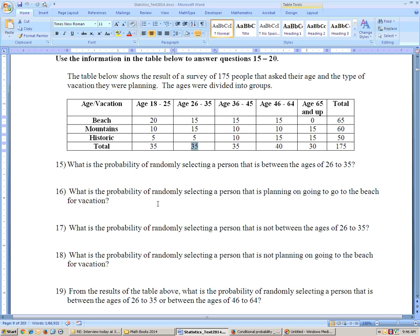Next one, somebody vacations at the beach, 65 out of 175. 17, that somebody is not between the ages of 26 to 35. Well, the probability that somebody is between that age is 35 out of 175, so the probability they're not in that age group is 1 minus 35 out of 175, which would be the same as 140 out of 175.